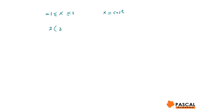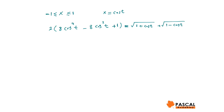From here, we have 2 times (8 cosine⁴(t) minus 8 cosine²(t) plus 1) equals square root of (1 plus cos t) plus square root of (1 minus cos t). Note that 8cos⁴(t) minus 8cos²(t) plus 1 equals cos(4t), and square root of (1 plus cos t) equals square root of 2 times the absolute value of cos(t/2), since 1 plus cos(t) equals 2cos²(t/2).